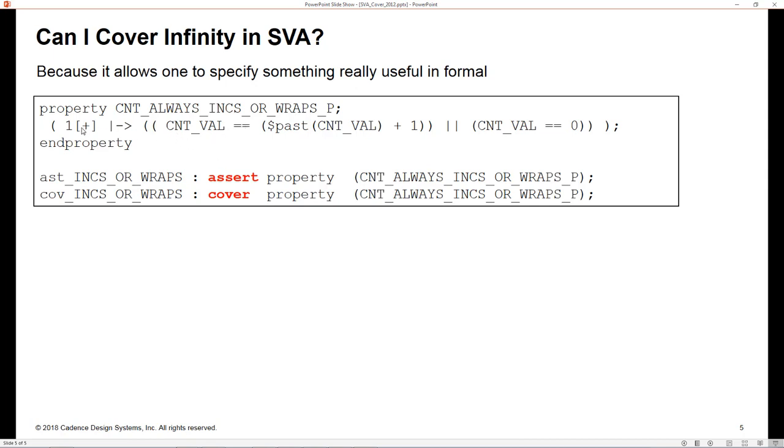What this is saying, if we ignore for a moment this expression here—one plus and the implication operator—and just consider the expression I'm drawing my mouse across now: the count value is always its previous value plus one, or its value is zero, i.e., it's wrapped round or it's been reset. Now what does this one plus do?